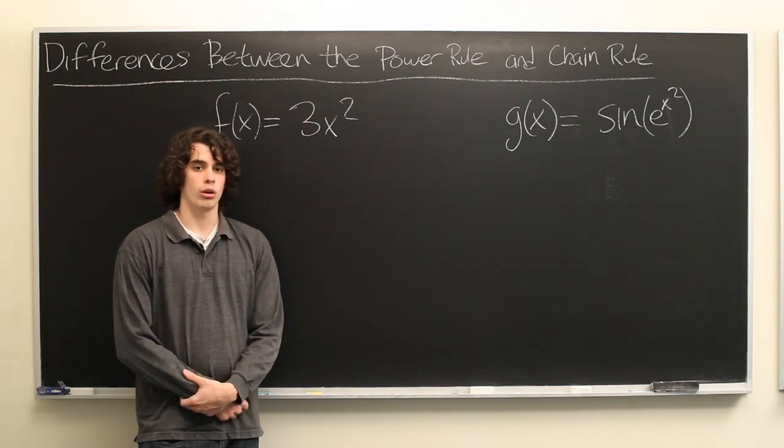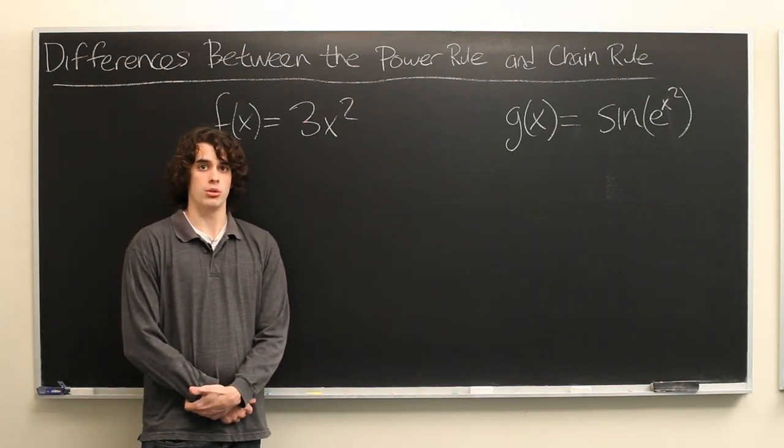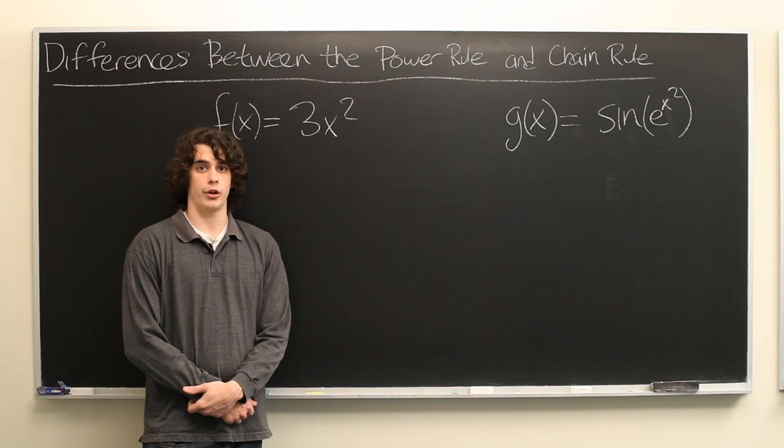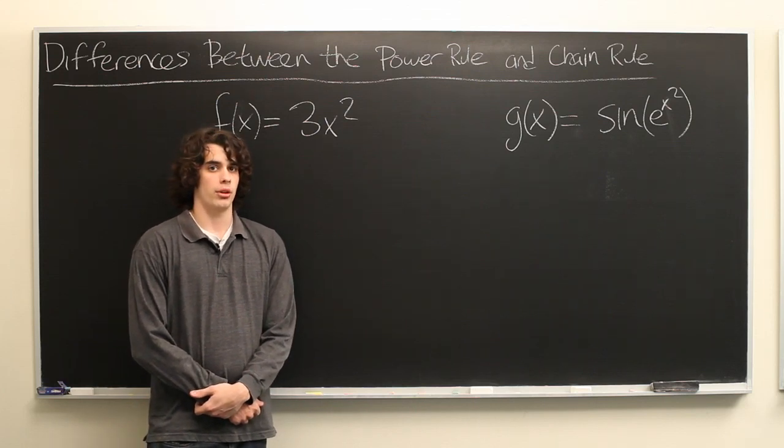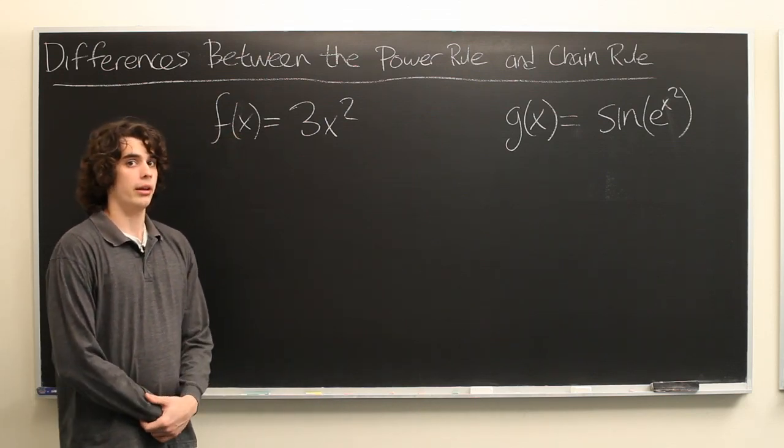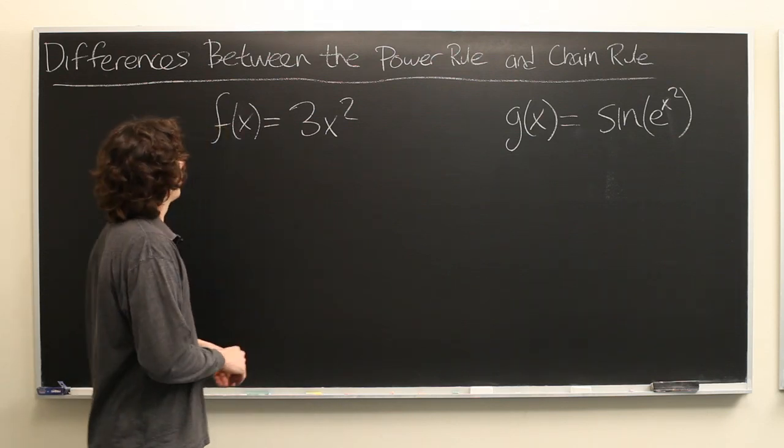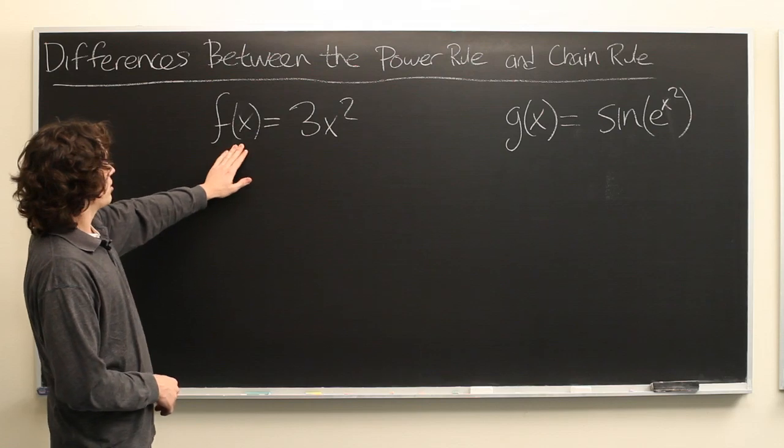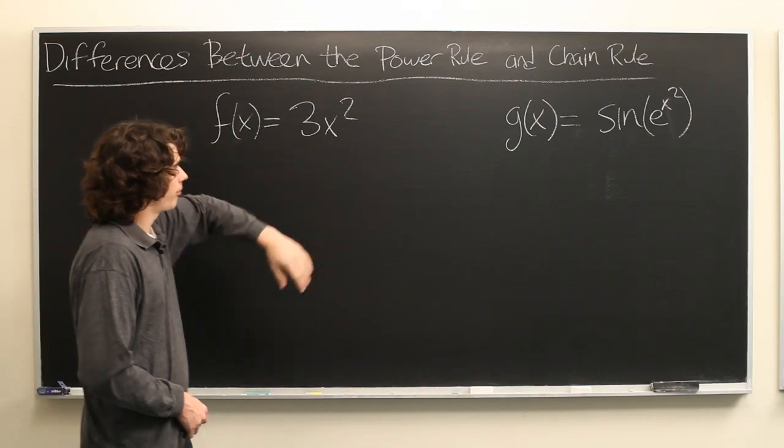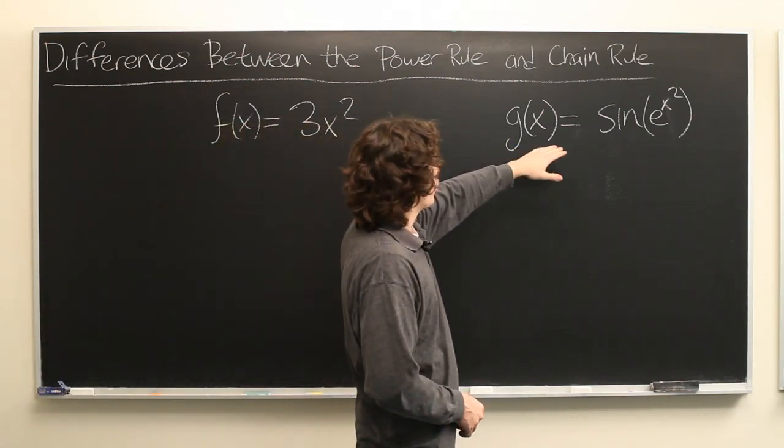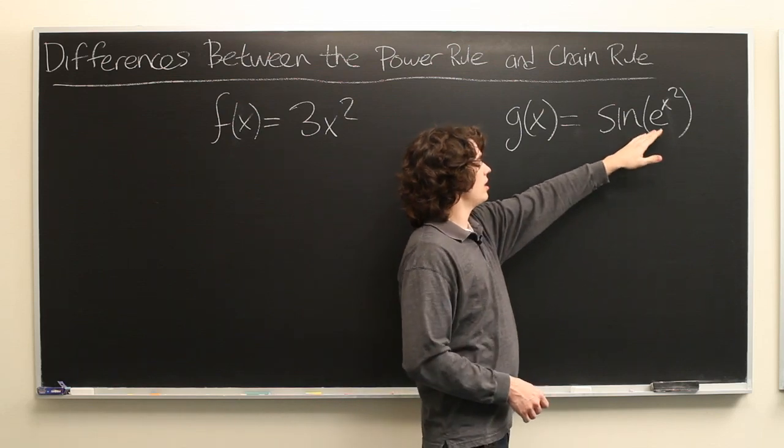The power rule and chain rule are two different techniques that can be used to find the derivative of a function. But they are different in the way that they are applied, and there are only so many different functions that can use either one of them. So here we have f is equal to 3x squared, and g is the horrendous looking sine of e to the x squared.